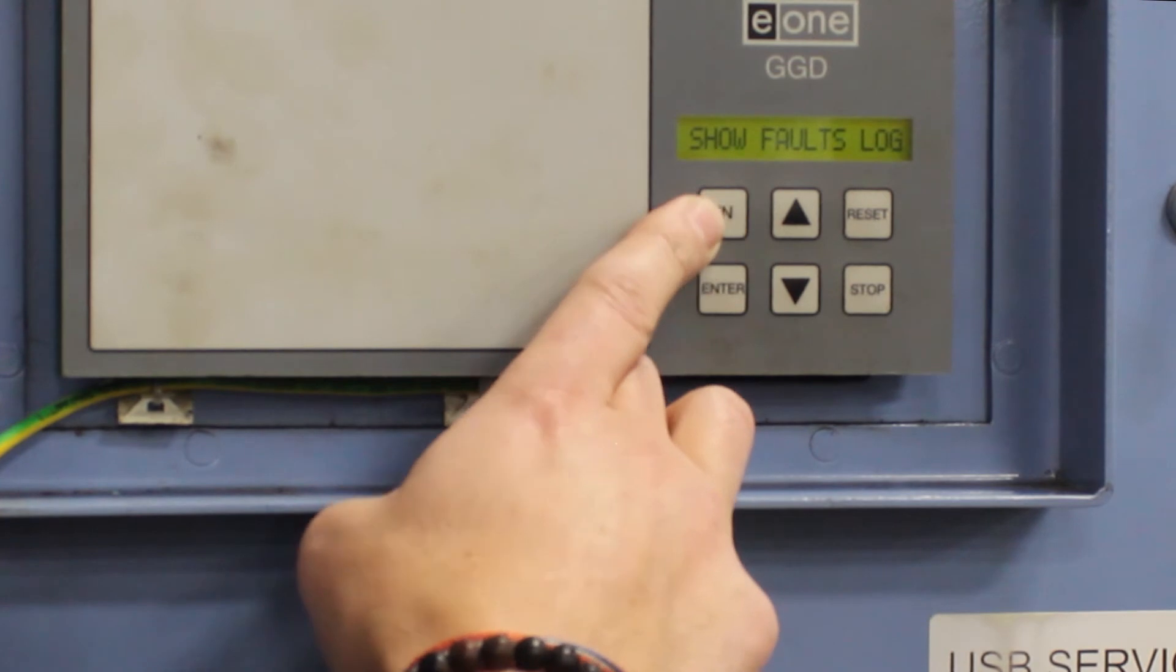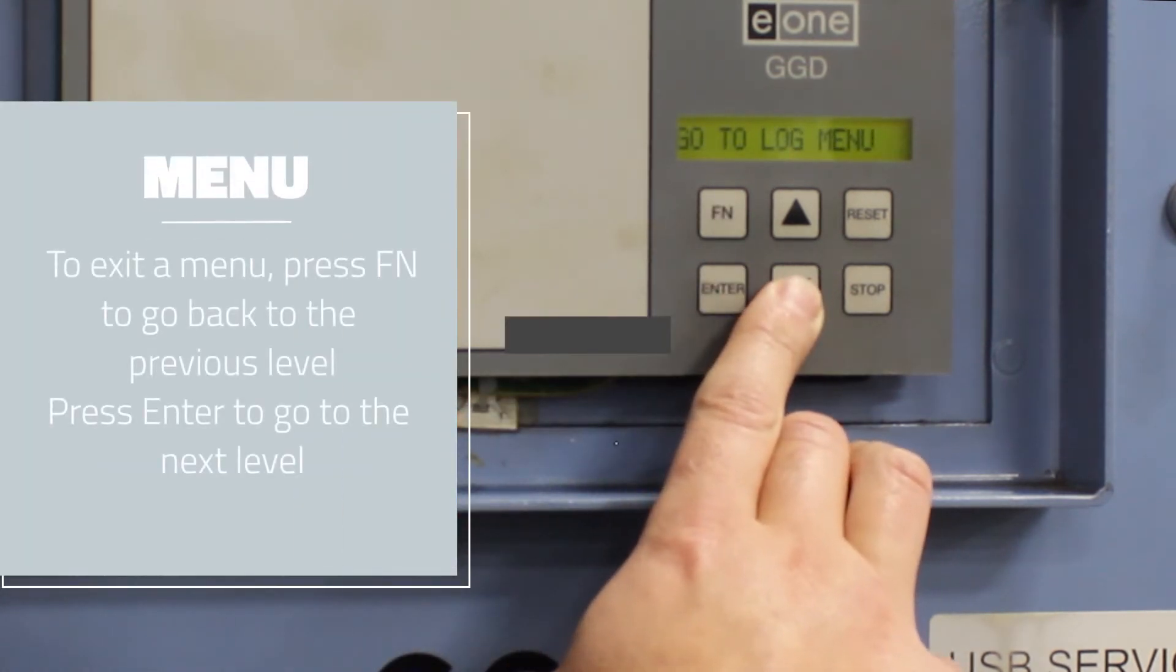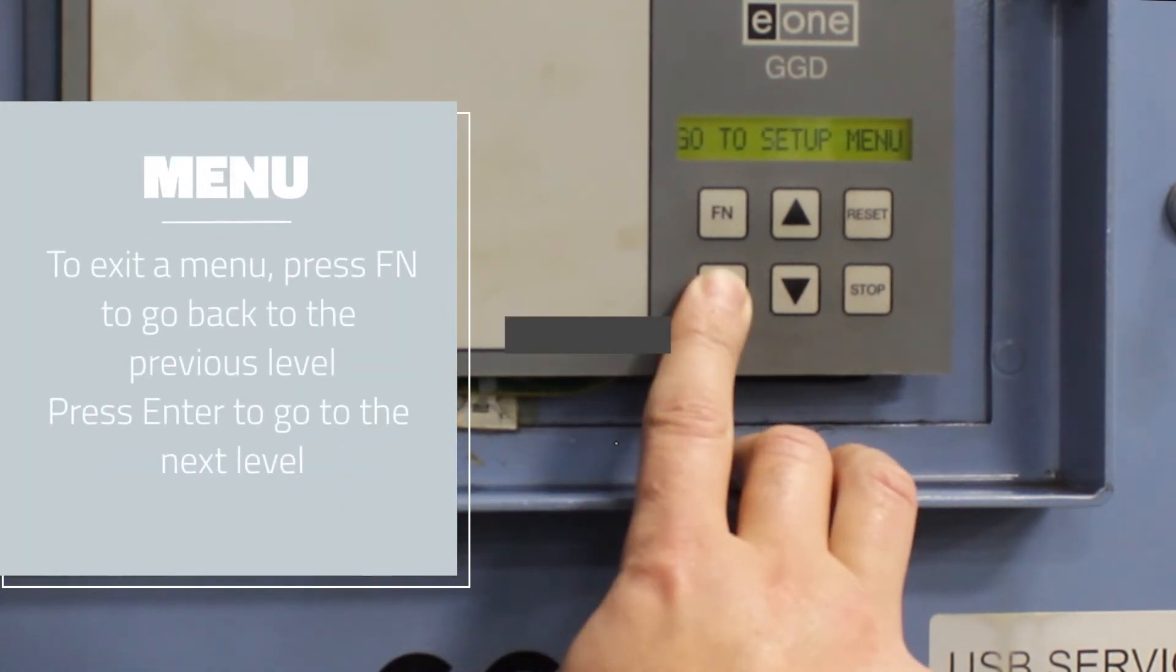To get out of these menus, press Function to bring you back to the previous level. You can go to the next menu.